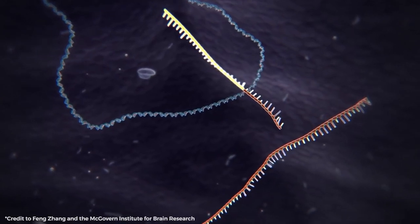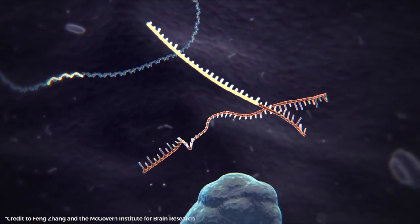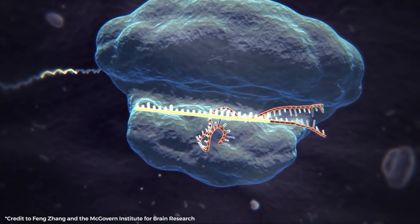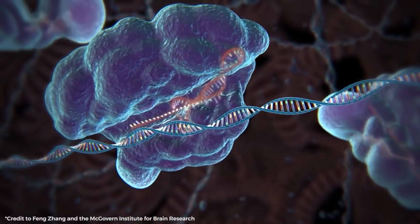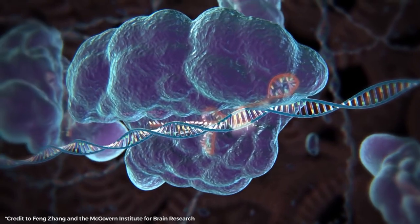To accomplish this, Cas9 creates a substance known as a guide RNA using the DNA that has been stored. The guide RNA, which is typically encoded by a CRISPR repeat, directs CRISPR to the DNA that needs to be cut.